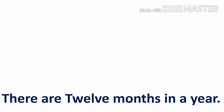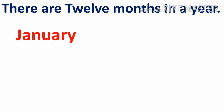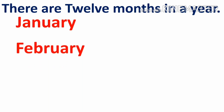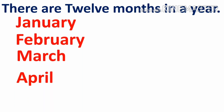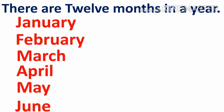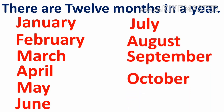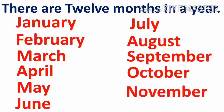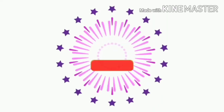There are 12 months in a year: January, February, March, April, May, June, July, August, September, October, November, December.